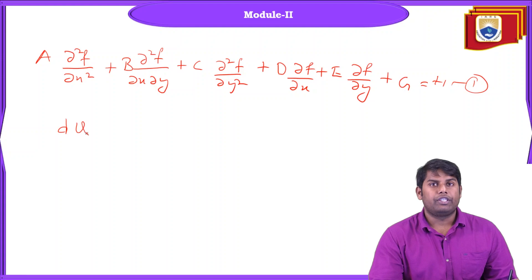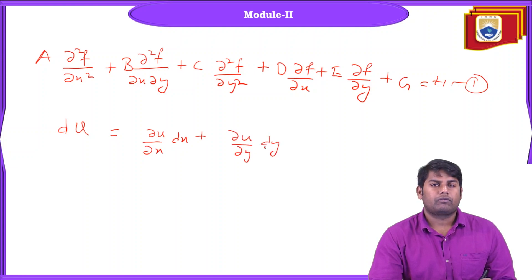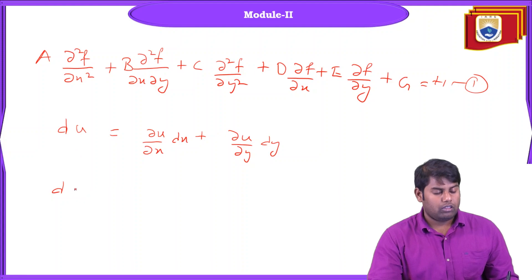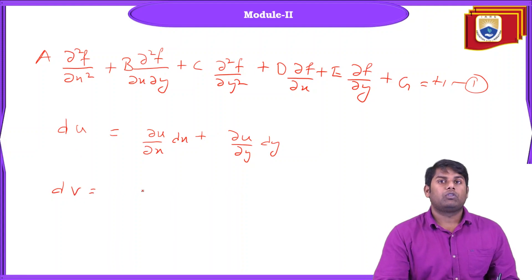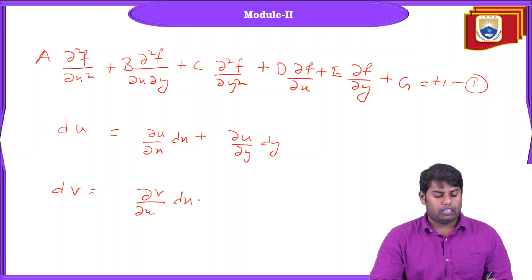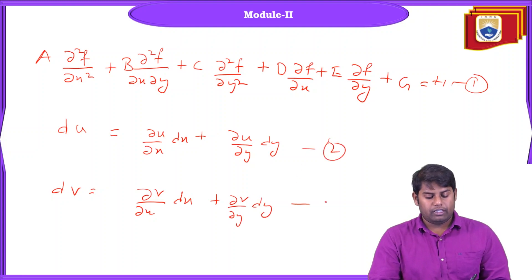We also have the exact differential. Using the chain rule: du = ∂u/∂x · dx + ∂u/∂y · dy. Since we are dealing with 2D, we work with u and v. Similarly: dv = ∂v/∂x · dx + ∂v/∂y · dy. This is the second and third equation in our system.